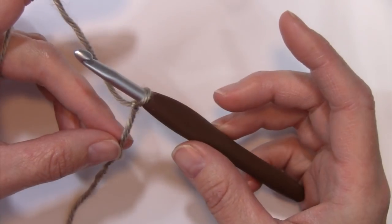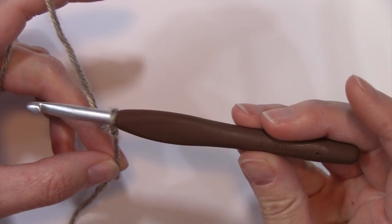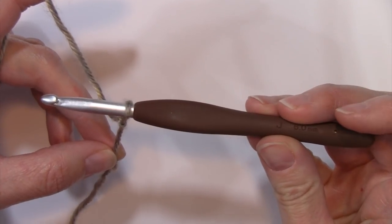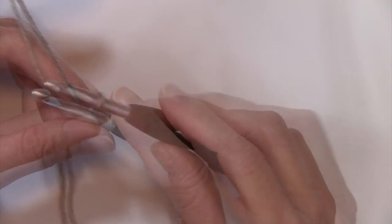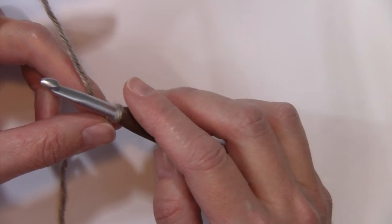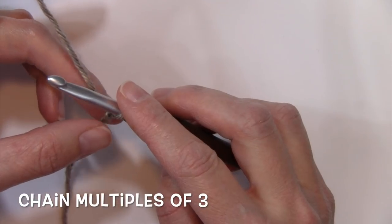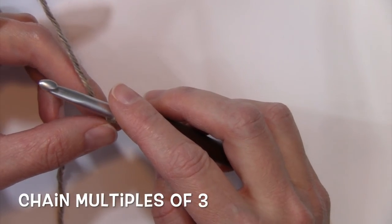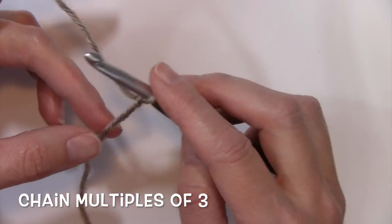Get your yarn on your hook. In this case I have a size J 6.0 millimeter crochet hook for the tutorial as well as a Lion Brand Heartland yarn. So to get started all you need to do is chain in multiples of three for this stitch pattern. I'm going to begin with a total of 24 chains.